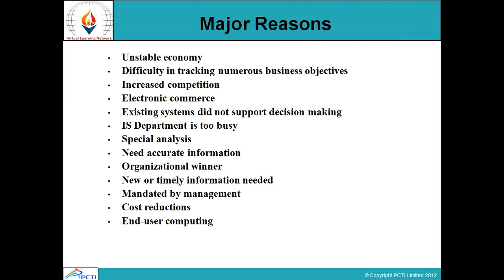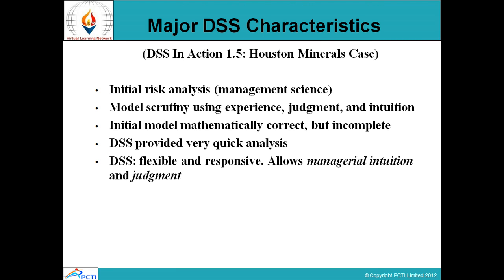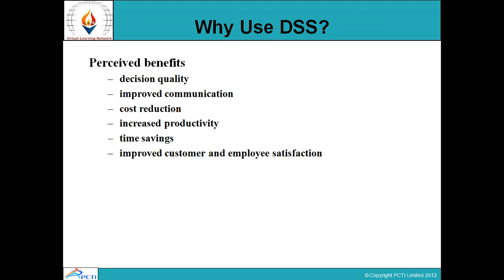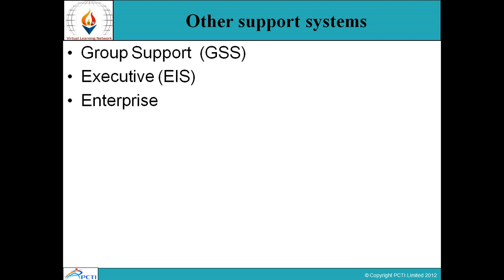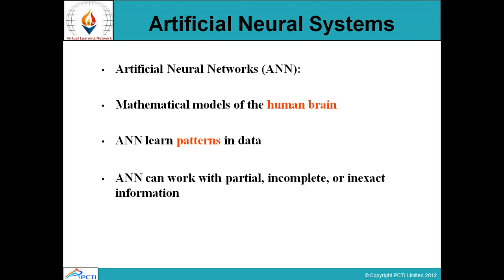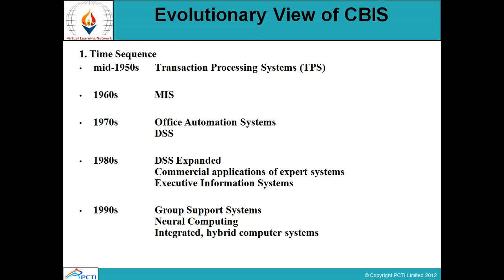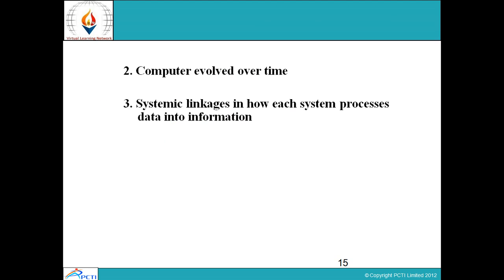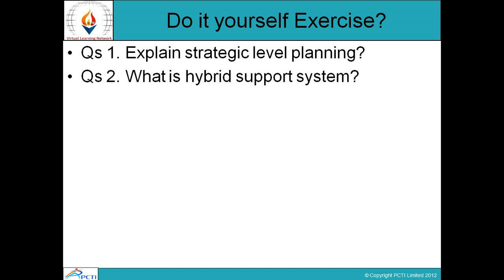To summarize what we covered in today's session: Decision Support System Concept, Major DSS Characteristics, Why Use DSS, major resources required for implementation of management support systems, other support systems, expert systems or knowledge-based systems, intelligent agents, artificial neural networks (ANN), knowledge management systems, hybrid management systems, evolutionary view of DSS, different strategies, steps in strategic planning, and operational-level planning. With this, we finish this session. Thank you.